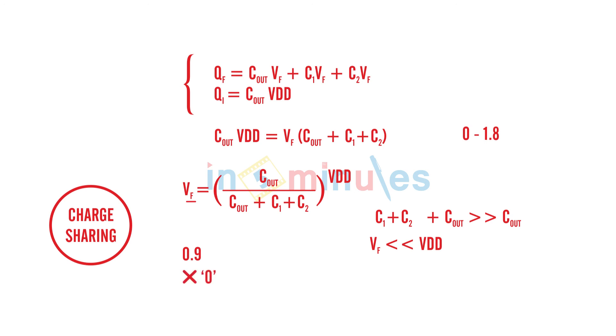Charge sharing happens when the transistors are on and tends to take your output node voltage to a lower value if it was initially charged to a perfect logic value high. Because of which if this value is far less than 0.9, if I'm considering a scale of 0 to 1.8, then it might be interpreted as a wrong logic value or it will be interpreted as logic 0. So we have to ensure that it stays above 0.9 or in simple language we have to ensure that C1 plus C2 is far far less than C_out. If that happens my final voltage will be nearly equal to VDD. I hope you have understood the concept of charge sharing. Thank you so much and stay tuned.